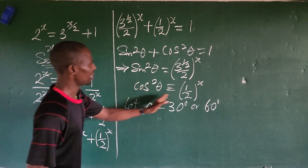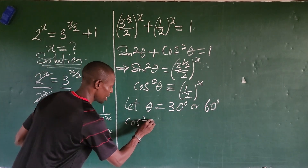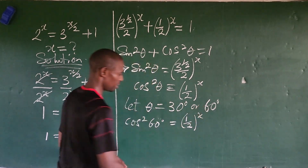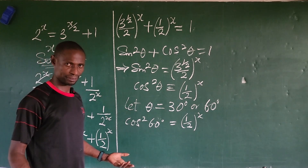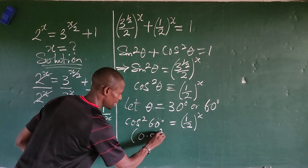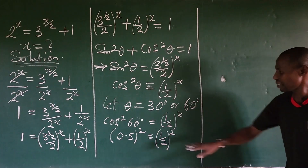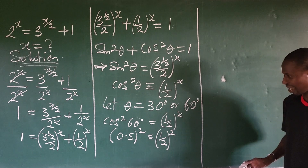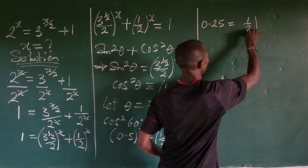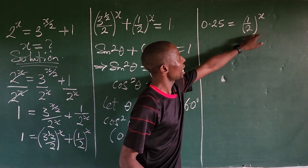Let's take the simpler one to get x. If we put 60 degrees in, we get cos²(60°), which equals 0.5. So we're going to have 0.5 raised to the power of x equal to 1 over 2 raised to the power of x. Squaring, 0.5 squared gives us 0.25, so we have 0.25 equal to (1/2) raised to the power of x.